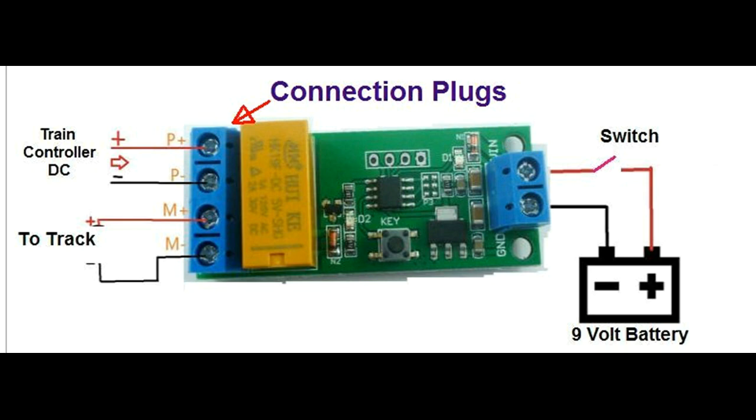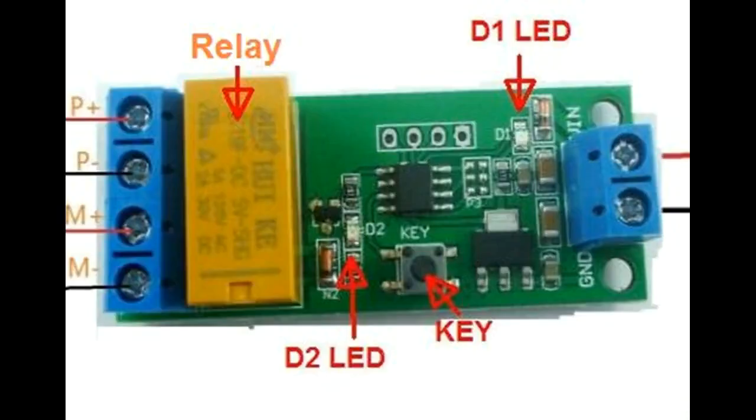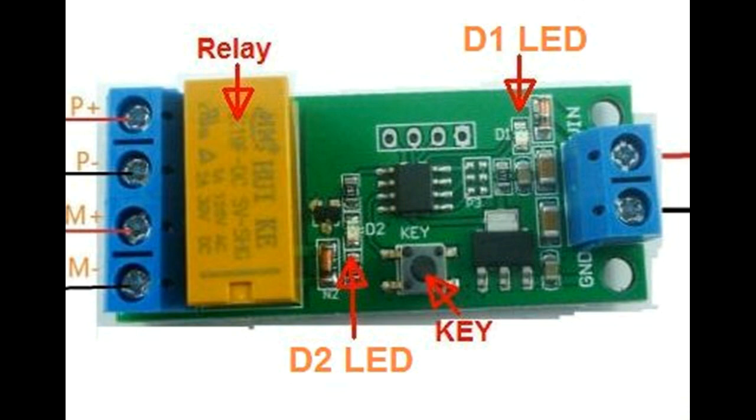Another set of connection plugs labeled P plus and P minus attached to the train controller's variable DC source. The final set labeled M plus and M minus attaches to wires that go to the track to drive the locomotive electric motor. The relay board contains the relay switch, a double pole, double throw switch that alternates power to the track for the back and forth movement of the locomotive.